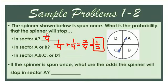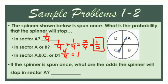What about landing in sector A, B, C, or D? You have four chances of landing on A, B, C, or D out of four total chances. So you have a 100% chance — it is certain that you will land on A, B, C, or D.